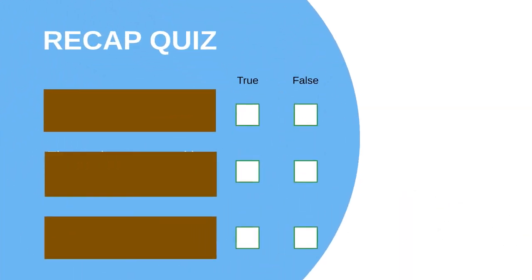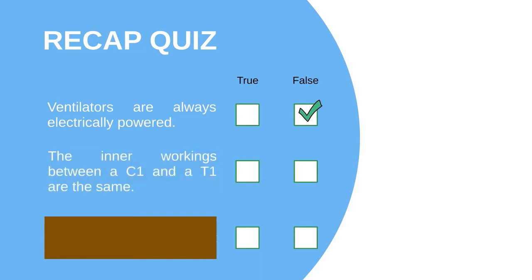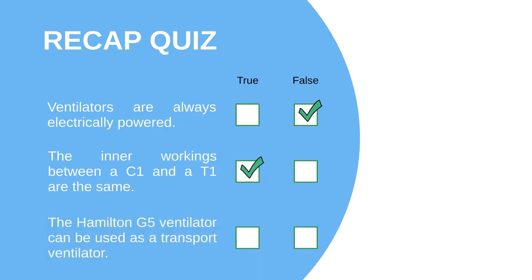Quick recap quiz: Ventilators are always electrically powered — that is false. The inner workings between the C1 and the T1 ventilator are the same — that is true. The Hamilton G5 ventilator can be used as a transport ventilator — that is false.